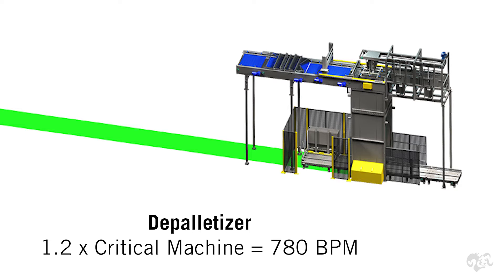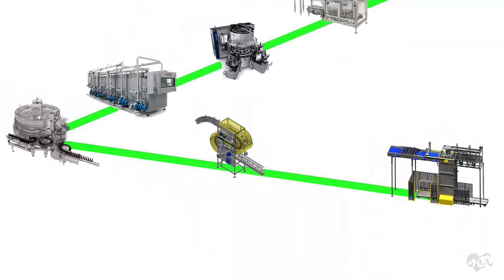The idea upstream of the critical machine is to store as much product as possible, so that if there's a hiccup in the upstream machine, the critical machine keeps running. Once the problem is fixed, the bottles catch back up and keep that machine running 100% of the time if at all possible.